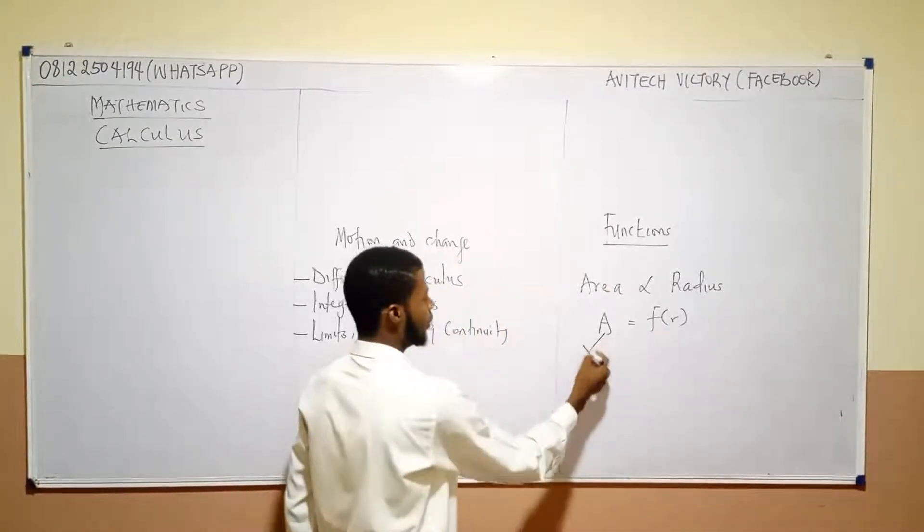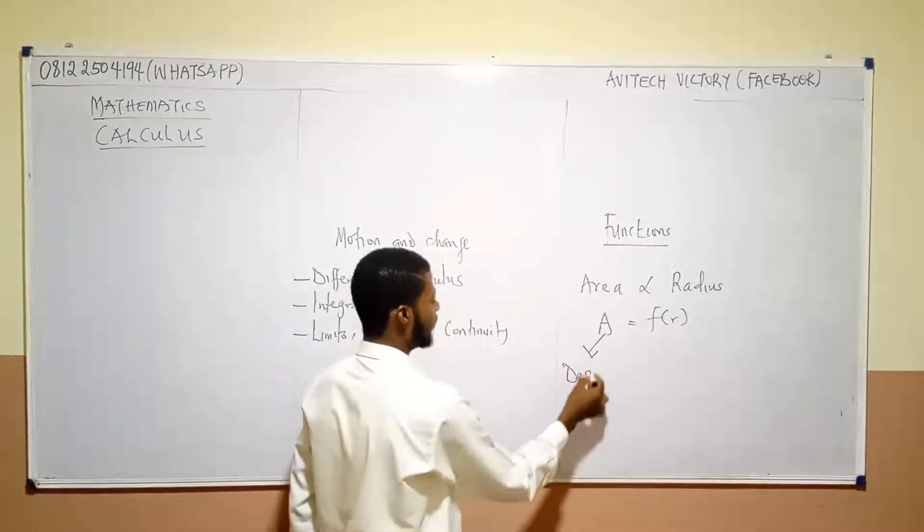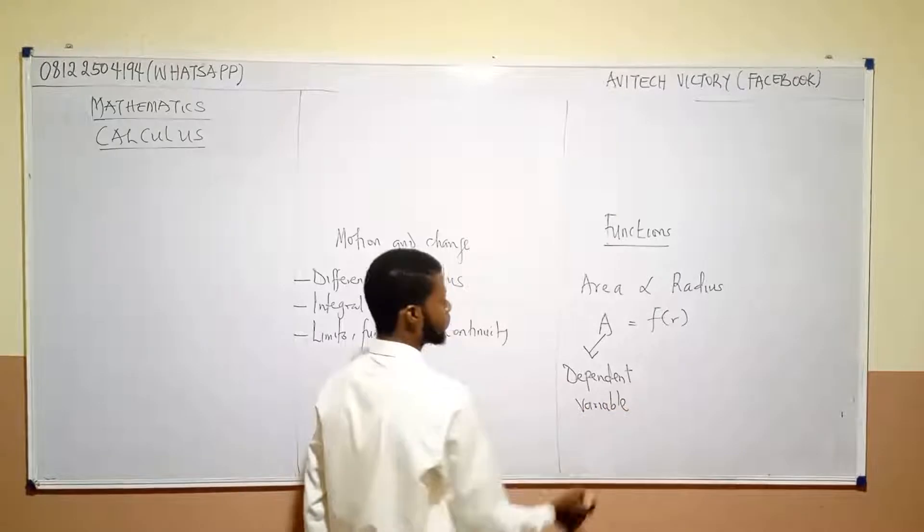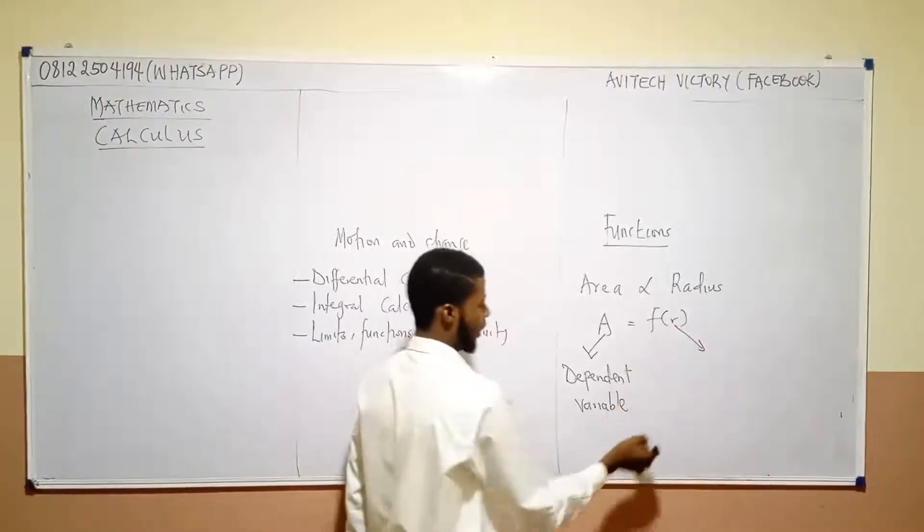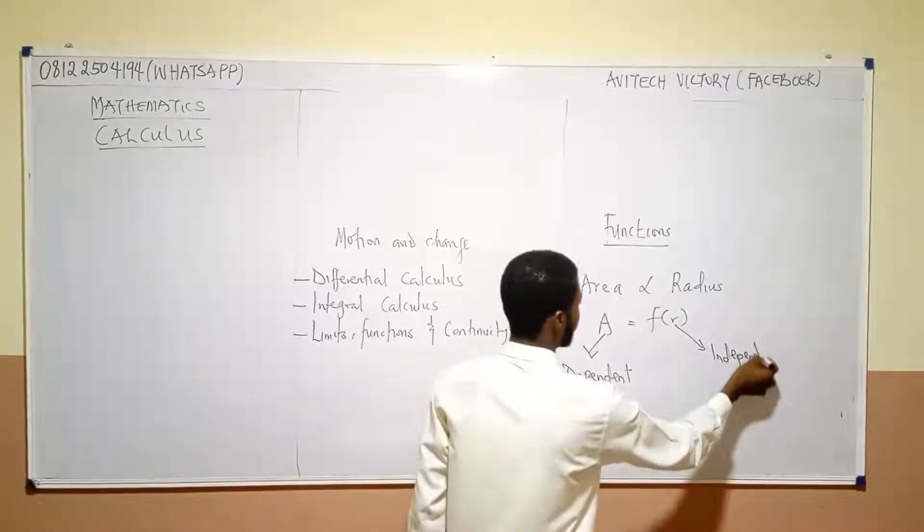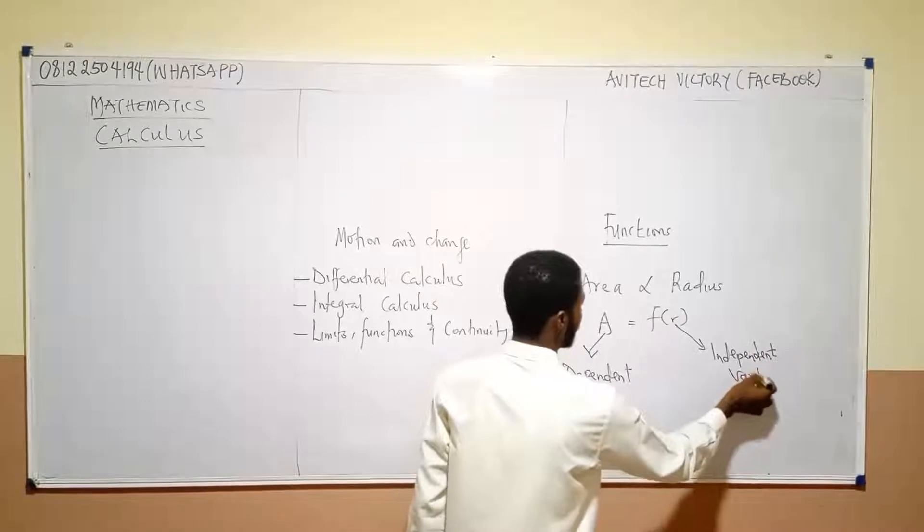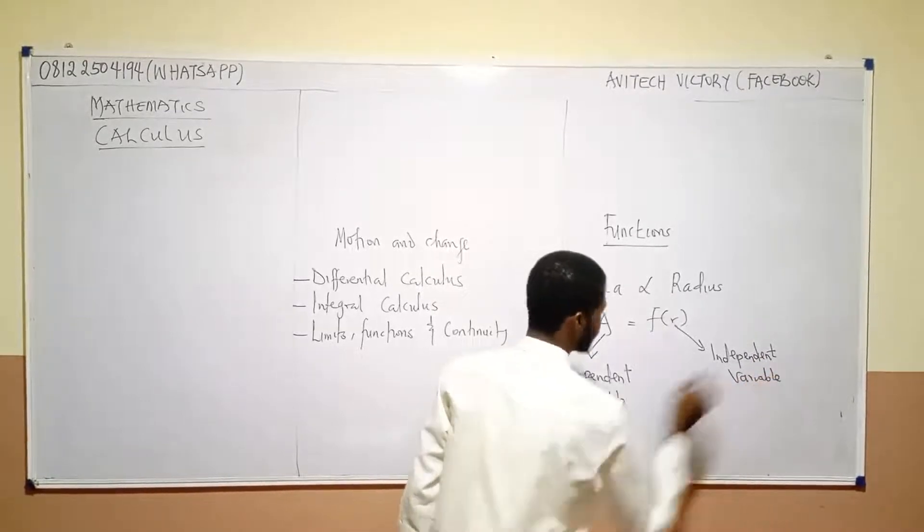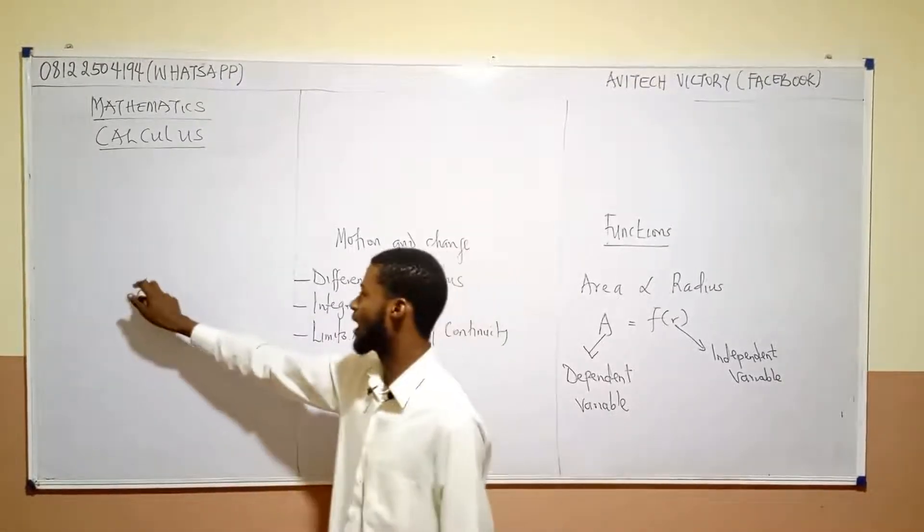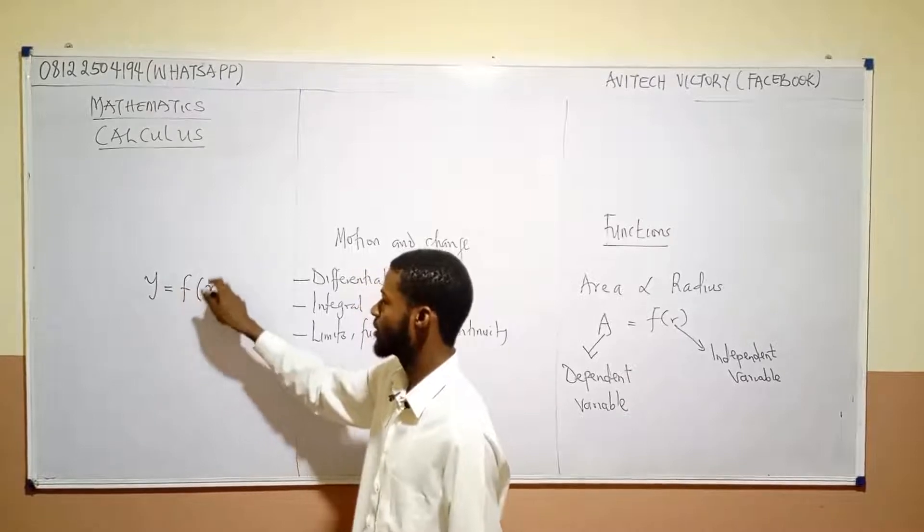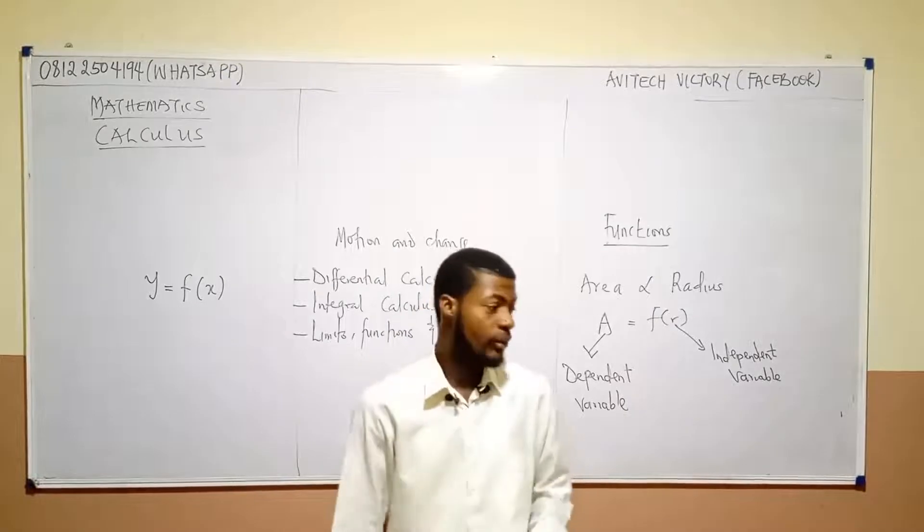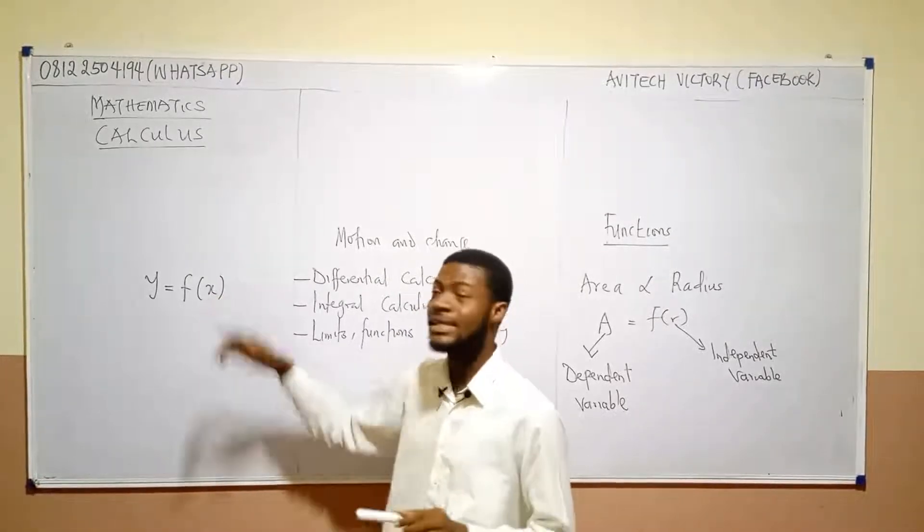So, this a is called a dependent variable. It's called a dependent variable. So, while r itself is the independent variable. Now, same thing applies when we have something like y equal f of x. Same thing applies. Y is the independent variable. Sorry. Y is the dependent variable. Y is independent.